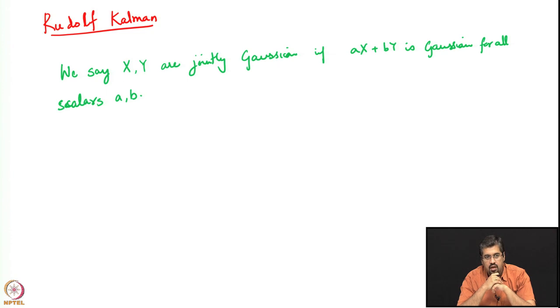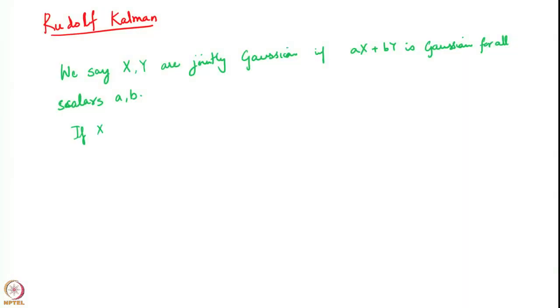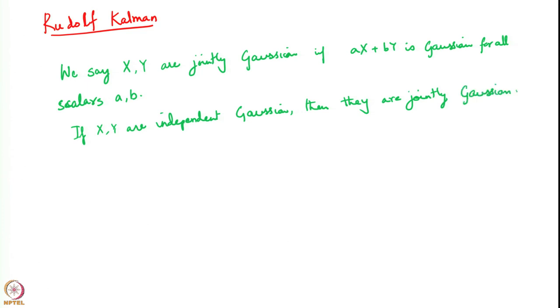The particular case in which jointly Gaussian becomes equivalent to marginally Gaussian is when the two variables are independent. If x and y are independent Gaussian random variables, then they are also jointly Gaussian. Why do we need to think about jointly Gaussian random variables? That is because of the following simple result.